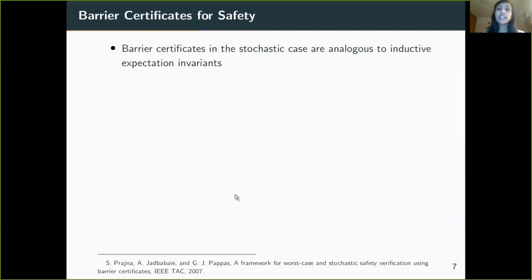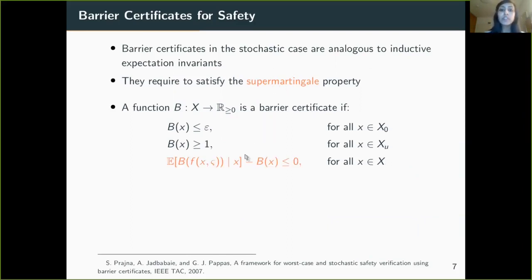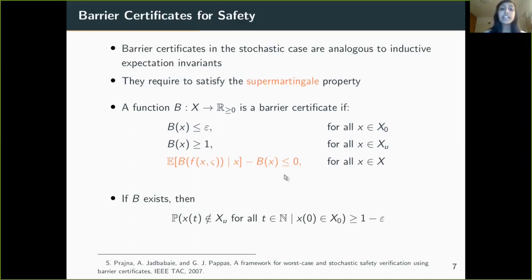Formally, barrier certificates are required to satisfy a super-martingale property, which requires that the expected value must be non-increasing after every time step. If this super-martingale property is satisfied, then we can say that the probability of not reaching unsafe regions is at least 1 minus epsilon, where epsilon comes from the initial condition of the barrier certificate.